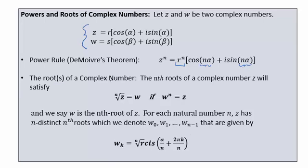The root or roots of a complex number: the nth roots of a complex number z will satisfy that the nth root of z is w if w to the n is z. And we say w is the nth root of z. For each natural number n, z will have n distinct nth roots, which we'll denote with subscripts, that are given by this formula.